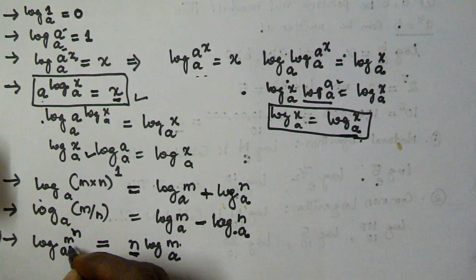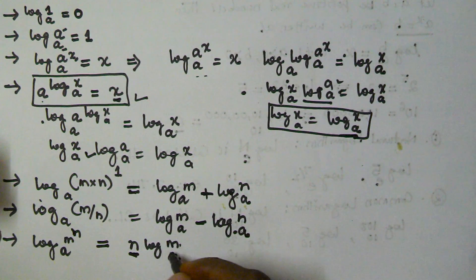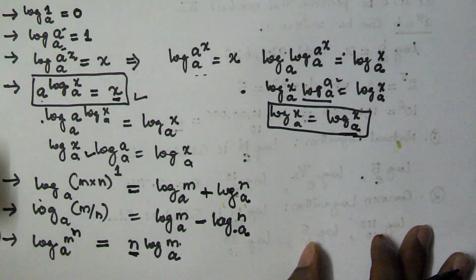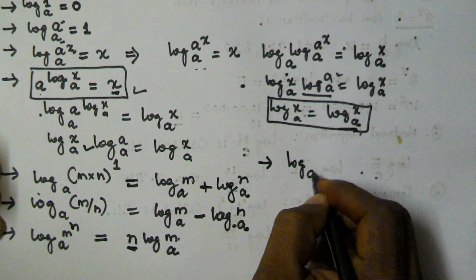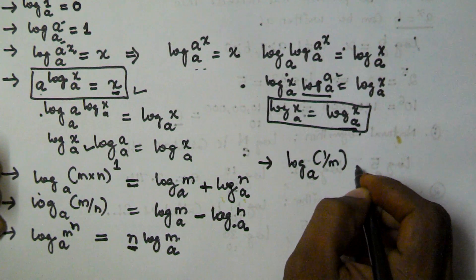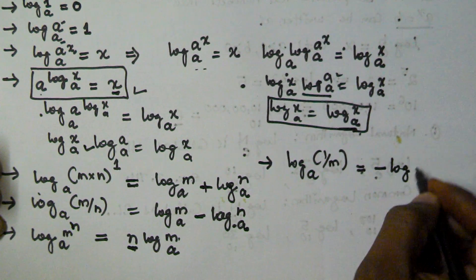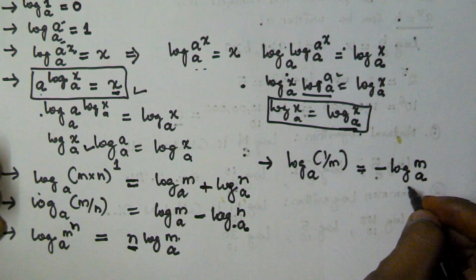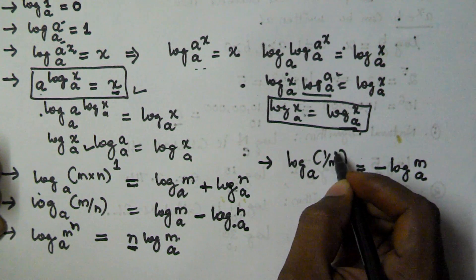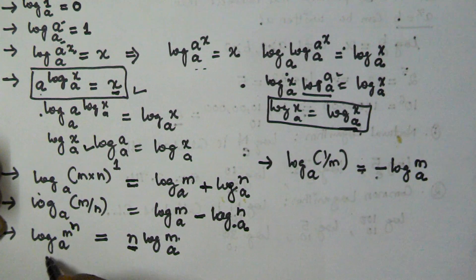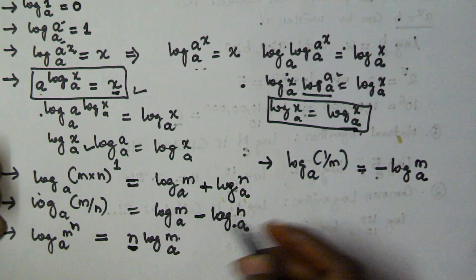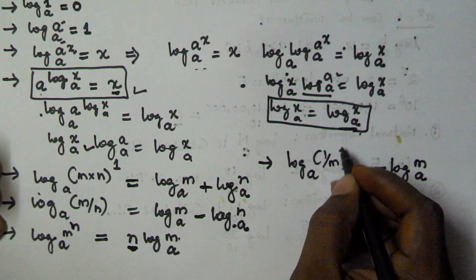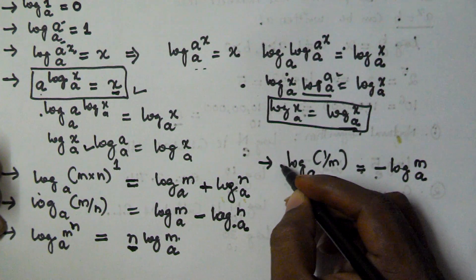So log m^n base a is equal to n log m base a. The next property is log base a of (1/m) is going to be equal to minus log m base a. We get this because 1/m can be written as m to the power of minus 1. By using the power rule, we move minus 1 to the front, giving us minus log m base a.